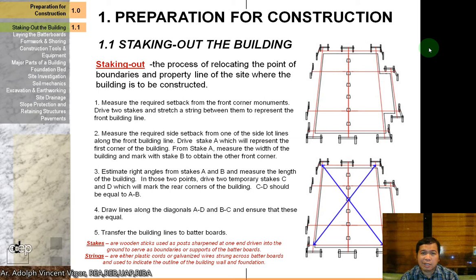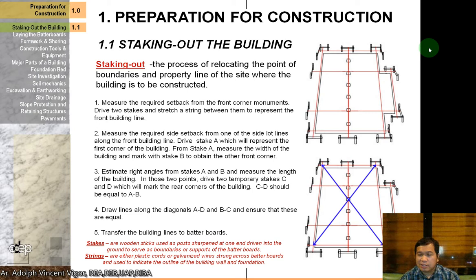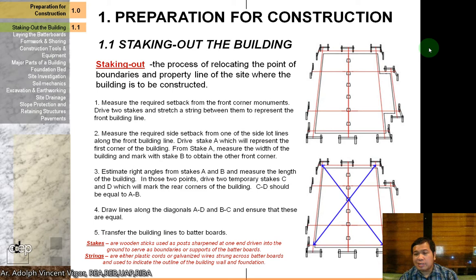For preparation for construction, the first is staking out the building. Staking out is the process of relocating the points of boundaries of a site where the building is to be constructed. Normally, the geodetic engineer or surveyor will go to the site and look at the boundaries. The key point is that you must not build beyond the property line — your building should only be within the property of your client.